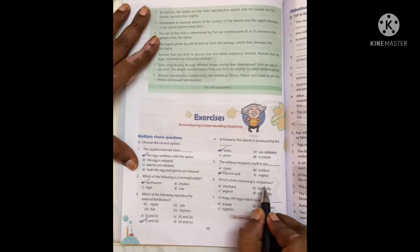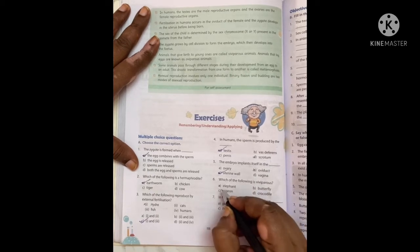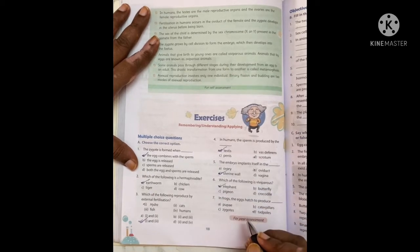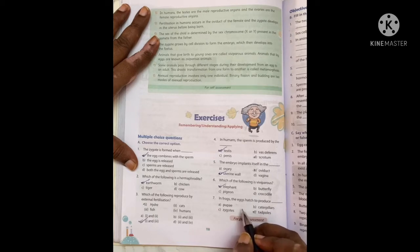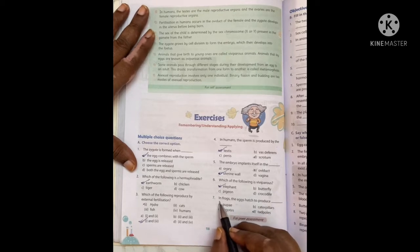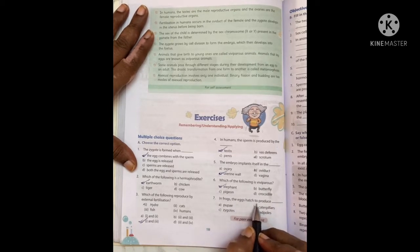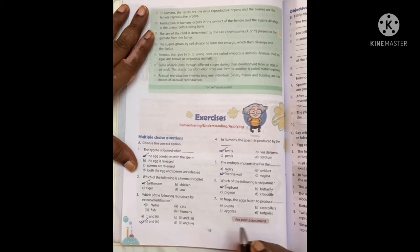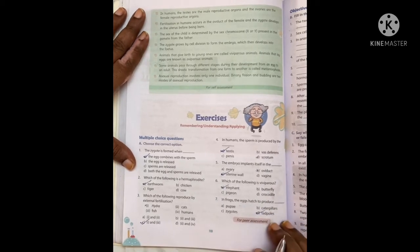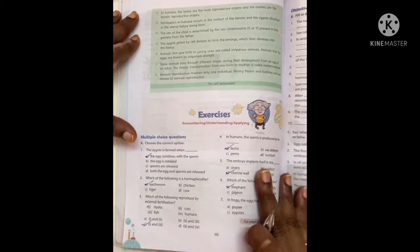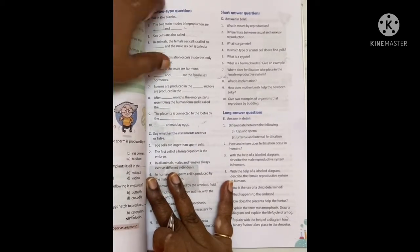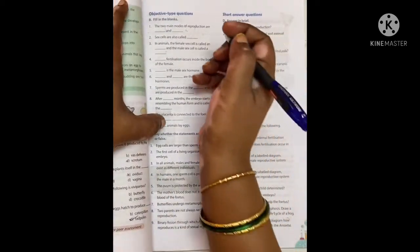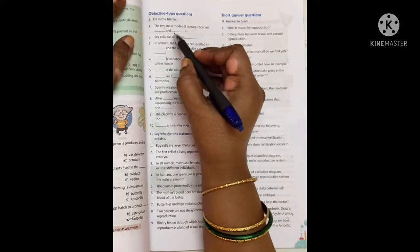Which of the following is oviparous? Which of the following is viviparous? Elephant.